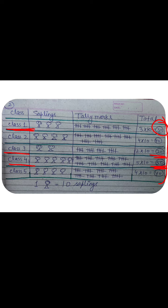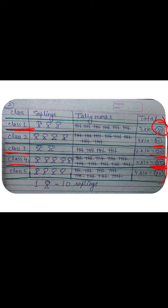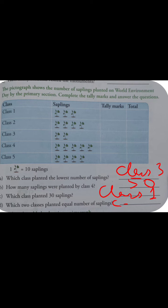Next: which two classes planted equal numbers of saplings? Equal number of saplings means the counting should be equal. This is 40 and this is also 40 — that means Class 2 planted 40 saplings and Class 5 also planted 40 saplings. So Class 2 and Class 5 planted equal numbers of saplings. Now you will write these answers in your book.